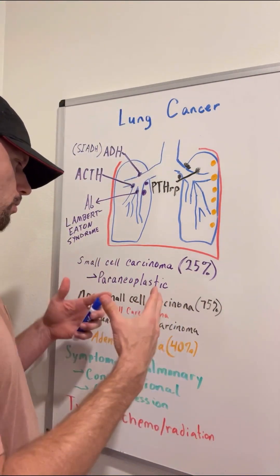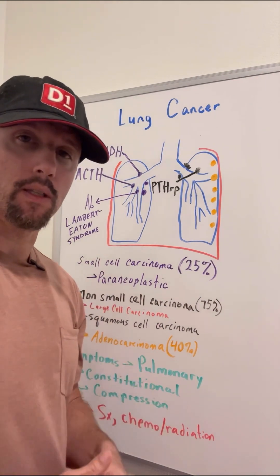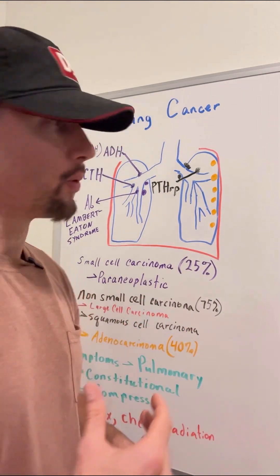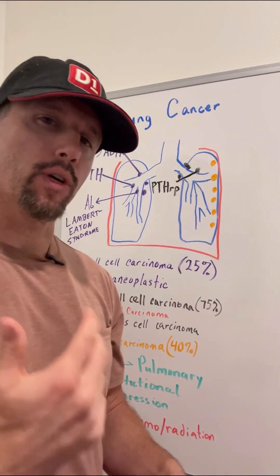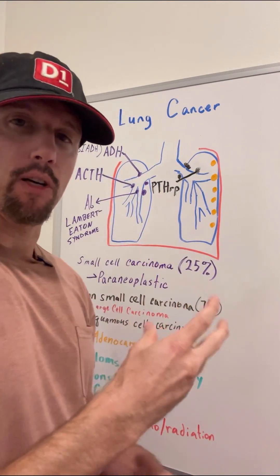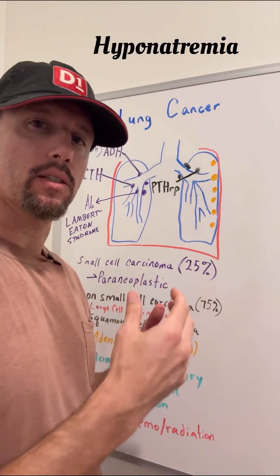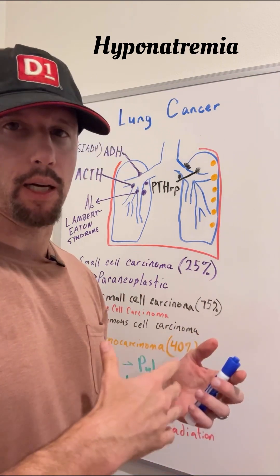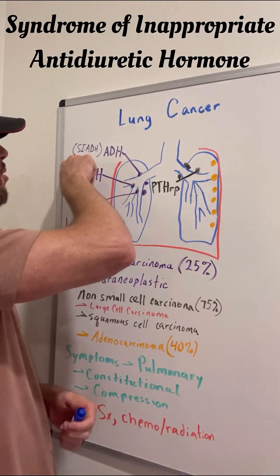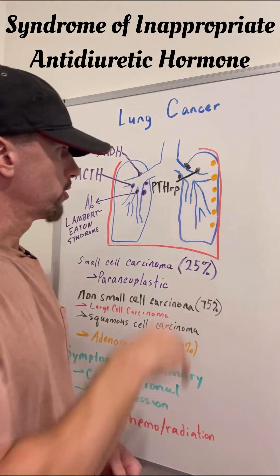One interesting thing about small cell carcinoma is it can cause a paraneoplastic syndrome, which is pretty common with small cell carcinoma, where it actually has ectopic hormone production. Ectopic means it's not from its normal location. For example, ADH — anti-diuretic hormone — is typically secreted by the posterior pituitary gland. If it's secreted by the neuroendocrine cells of small cell carcinoma within the lungs, that's an ectopic form of ADH, and you'll see hyponatremia, because ADH causes the kidneys to reabsorb more water and dilutes the blood. This is called syndrome of inappropriate anti-diuretic hormone, SIADH, coming from that neuroendocrine tissue.